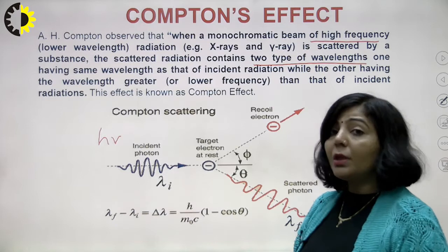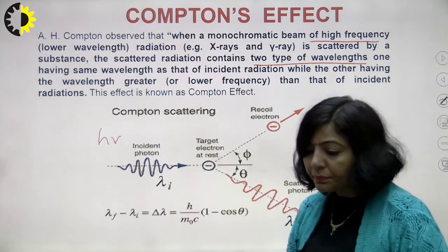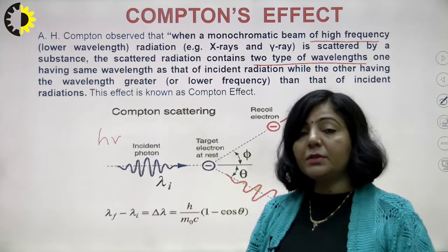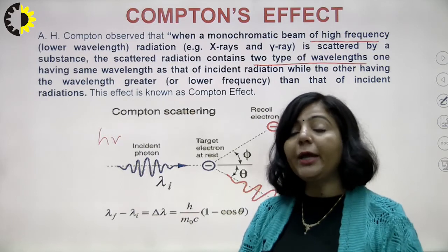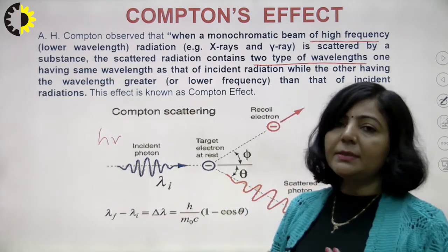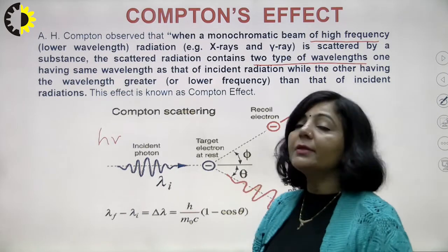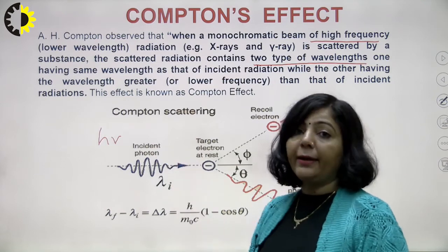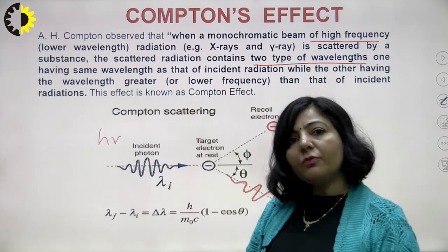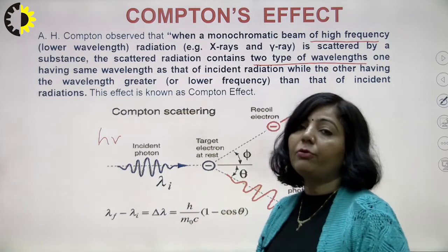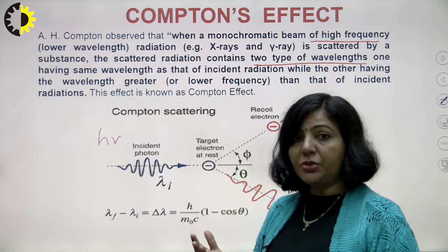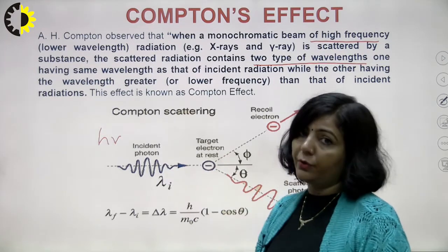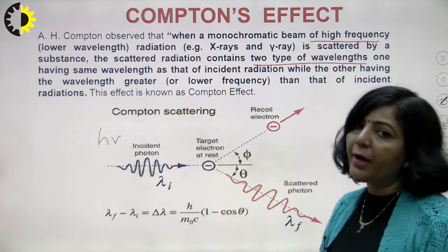These electrons in the target material have energy equal to their kinetic energy plus rest mass energy. However, since the kinetic energy of those electrons is very small compared to the highly energetic x-rays or gamma rays, we can assume those electrons are at rest with respect to the highly energetic photons. That is why 'target electron at rest' is written in the diagram.